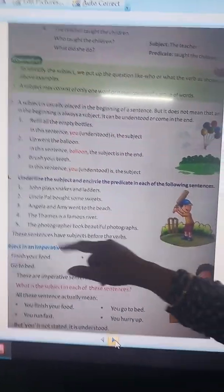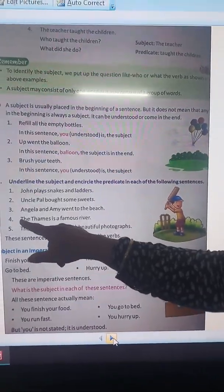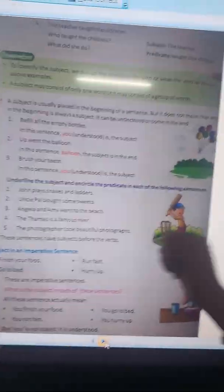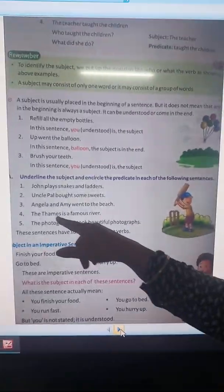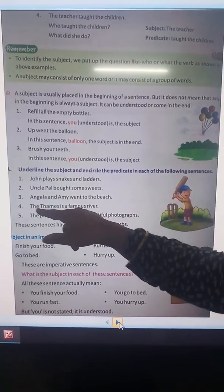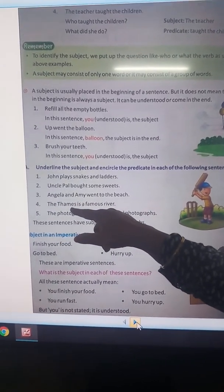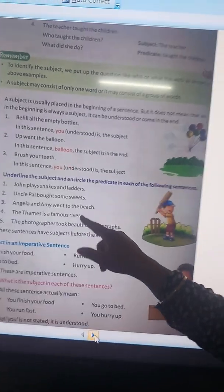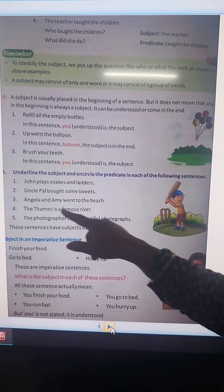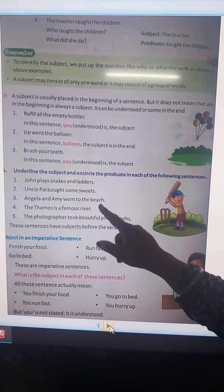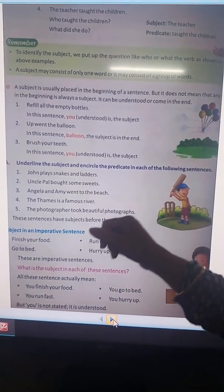Encircle the predicate. The Thames is a famous river. Which is a famous river? The Thames. Answer will come: The Thames. And the rest part, is a famous river, is predicate — then we encircle it.